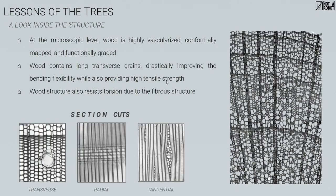The internal structure of saplings allows for significant strain well past what would be considered normal in an engineering structural problem, while maintaining cellular connections, being fully vascularized, and growing into a full structure before finally solidifying. Looking at the microstructure is incredibly cool. At the microscopic level, wood is highly vascularized and contains long oriented strands — both radially and tangentially — so you have oriented fibers that maintain great flexibility while resisting torsion and allowing bending.